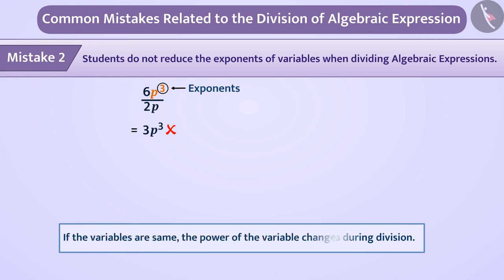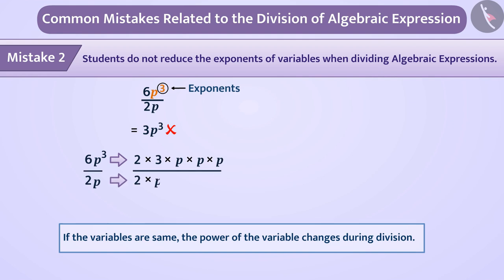If the variables are the same, the power of the variable changes during division. The factors of 6p cubed are 2 × 3 × p × p × p. Similarly, the factors of 2p are 2 × p. Here we cancel 2 in the numerator with 2 in the denominator, and p in the denominator with p in the numerator.